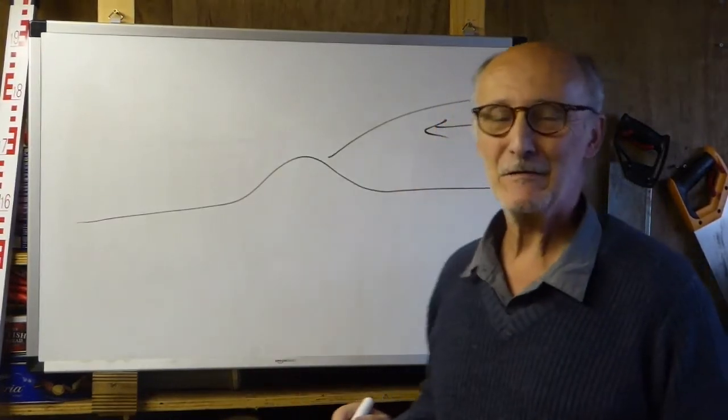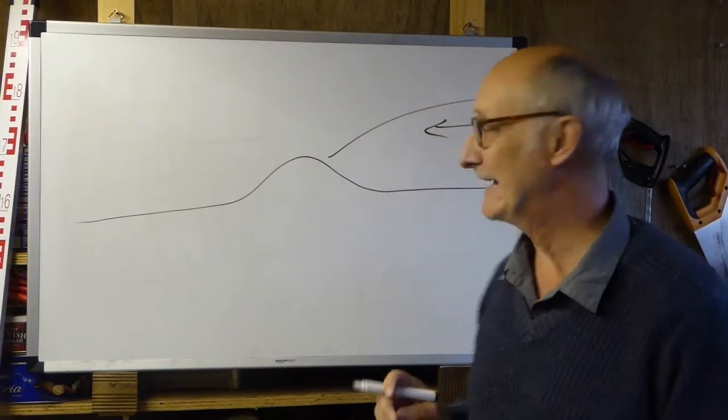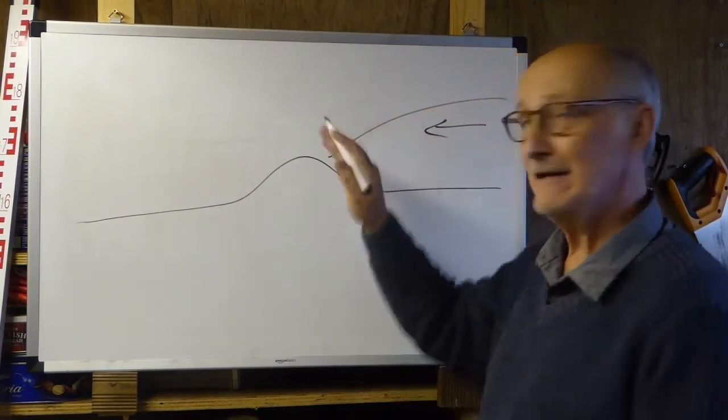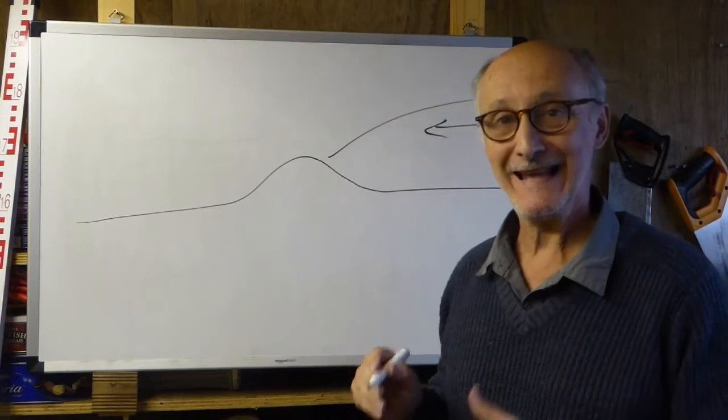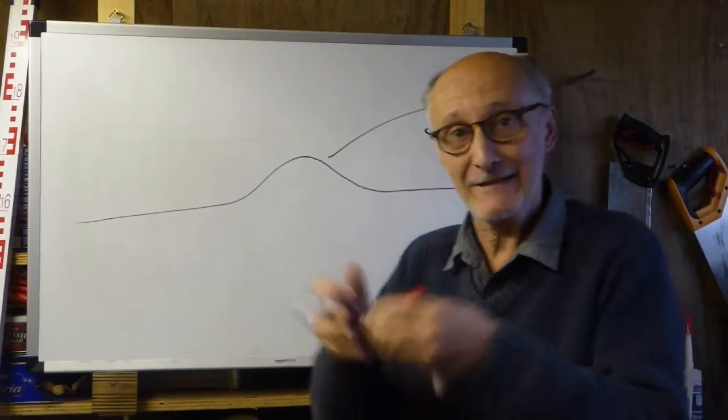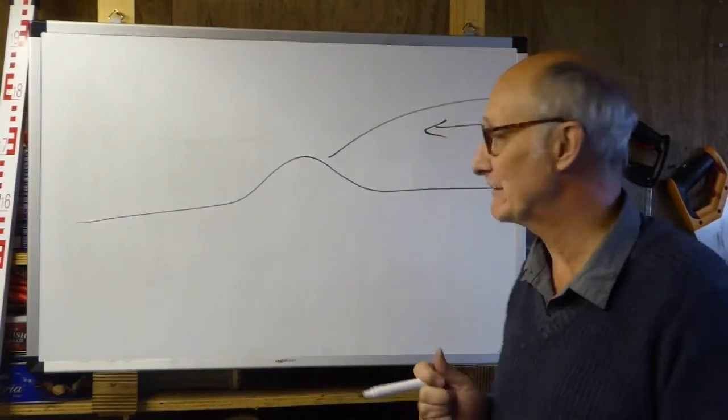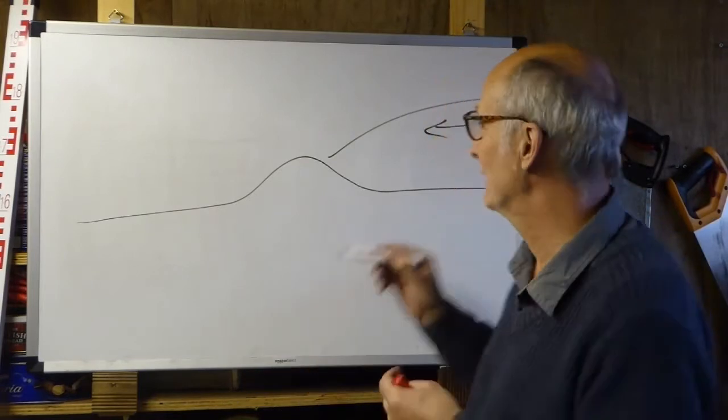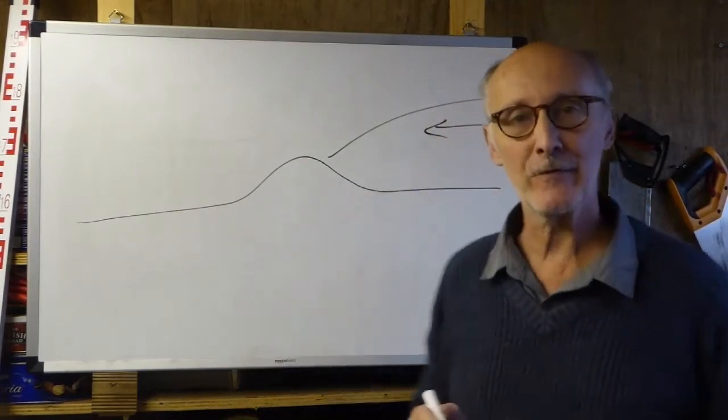So one example that I use with the second year, so you might encounter this again in more detail next year, is the edge of the glacier, an ice marginal land system. When we talk about landscapes, using that terminology sometimes we call it a land system, because there are inputs, there are outputs, there are throughputs, and so on.